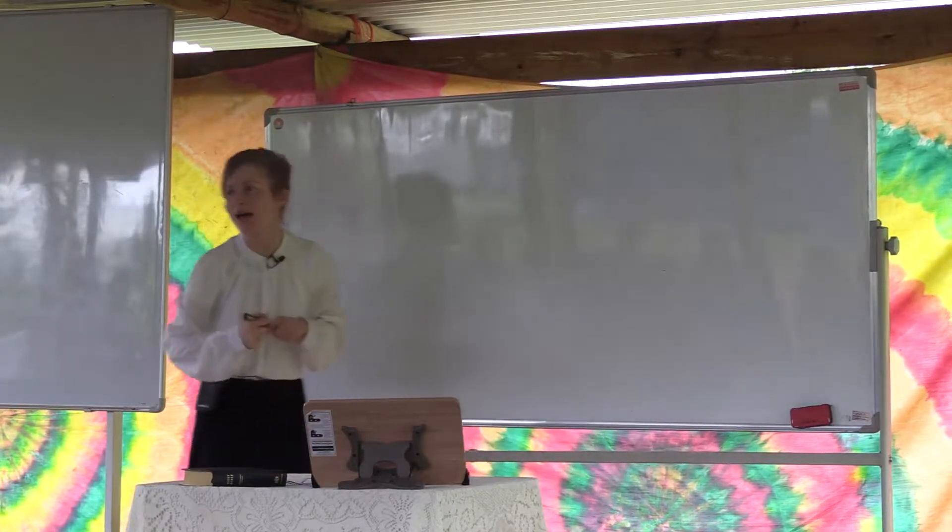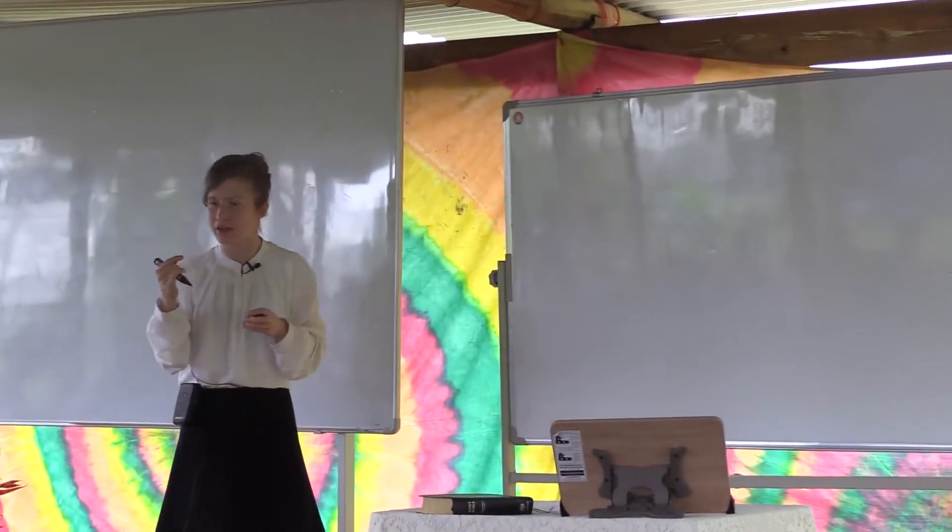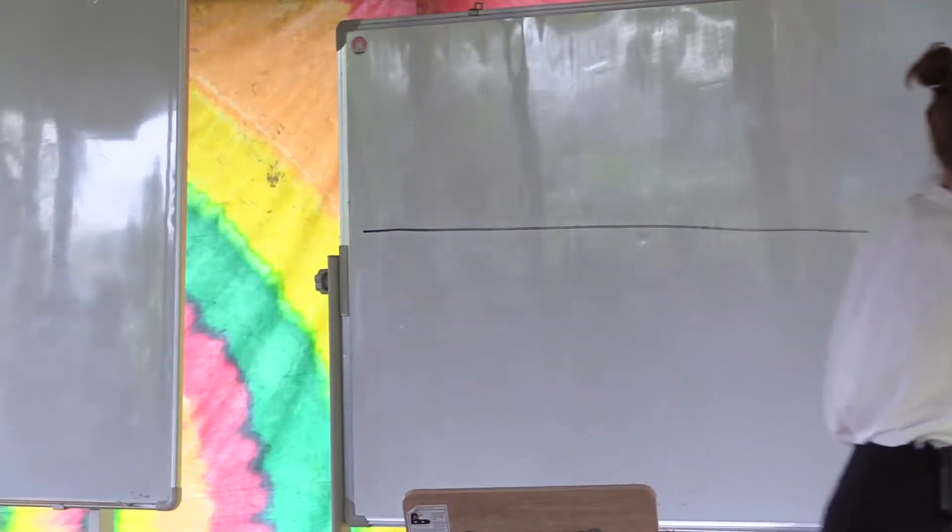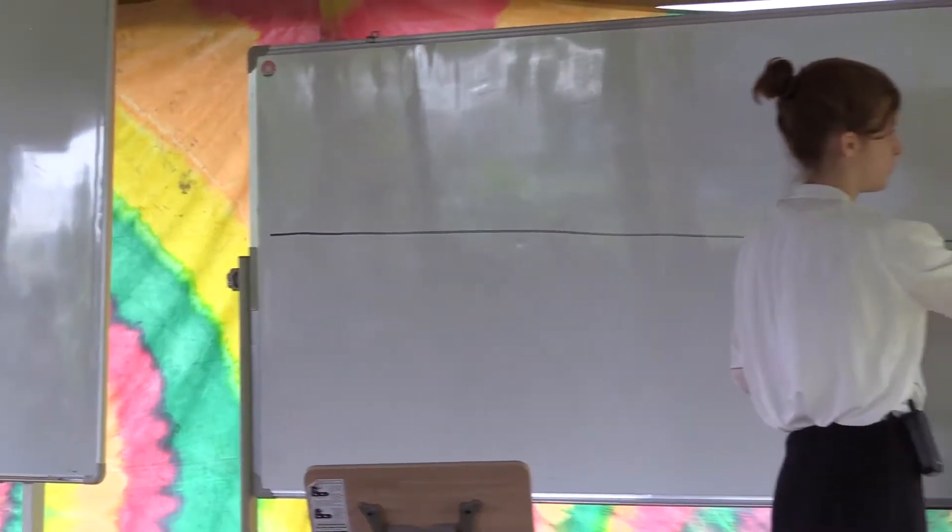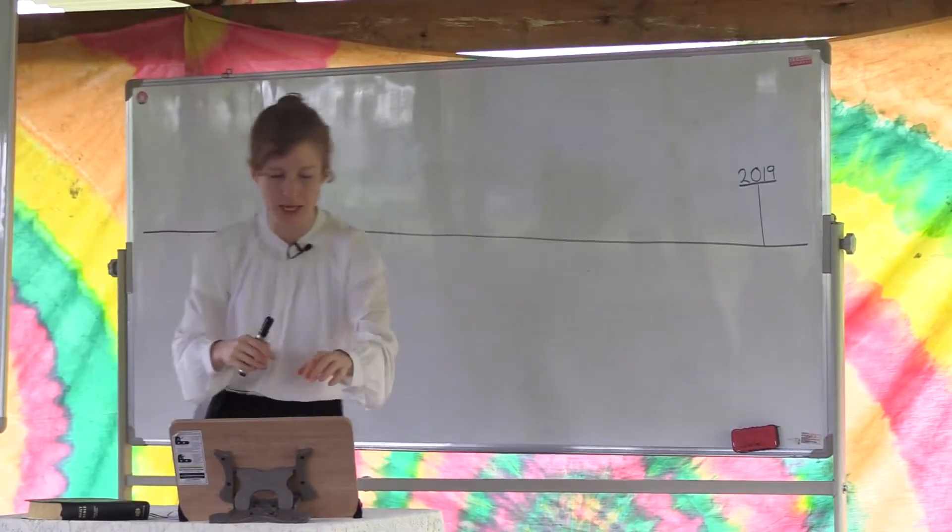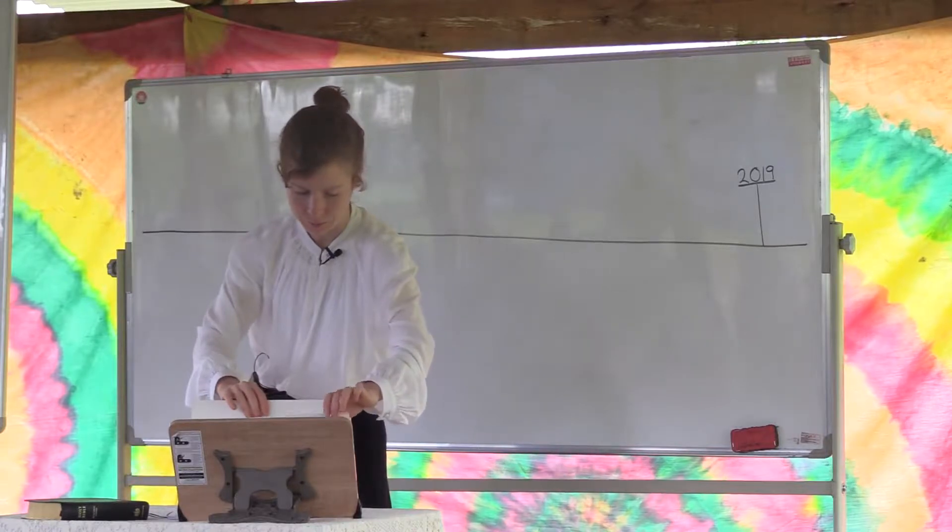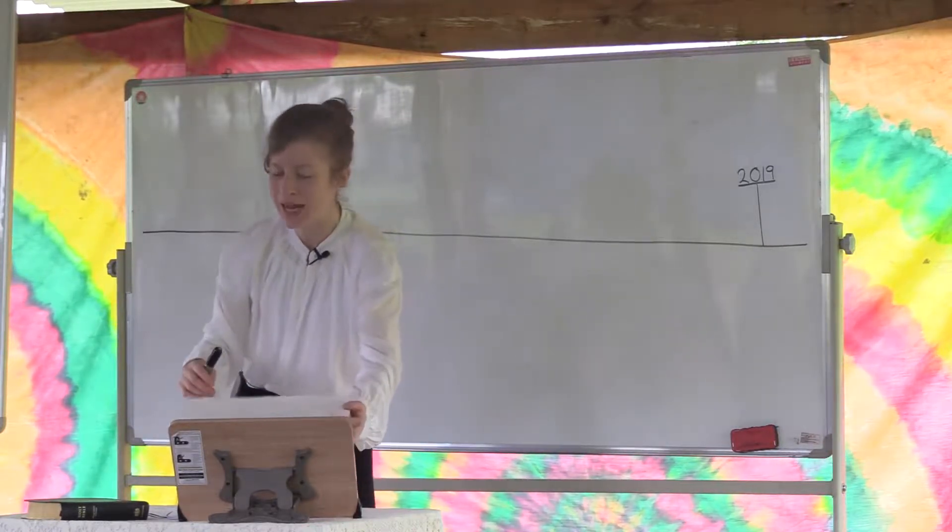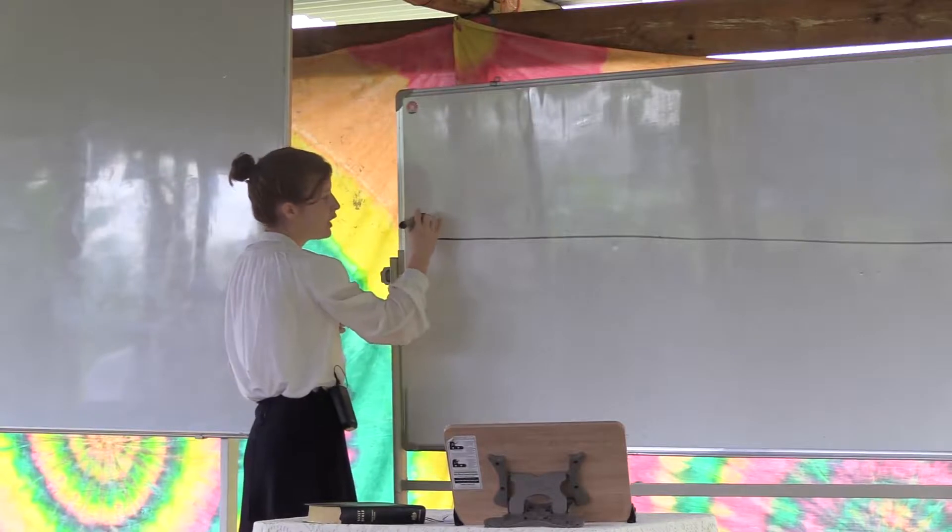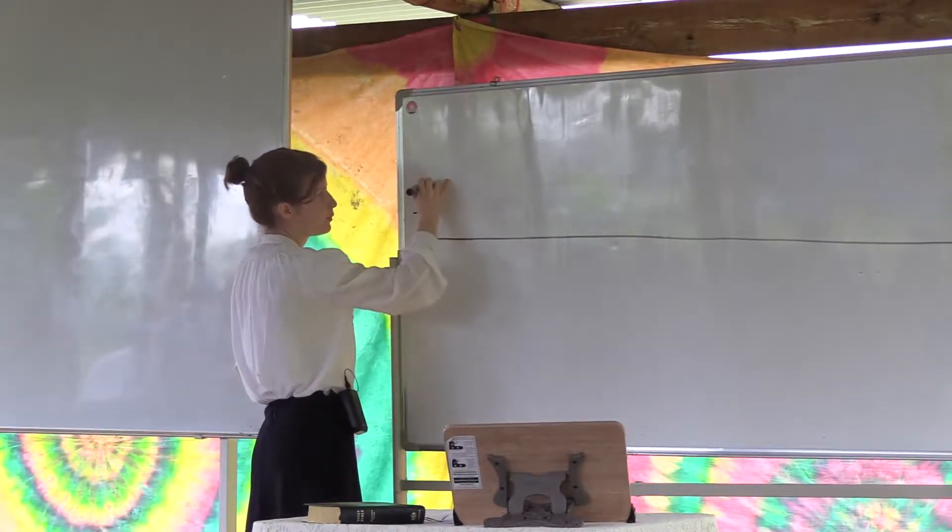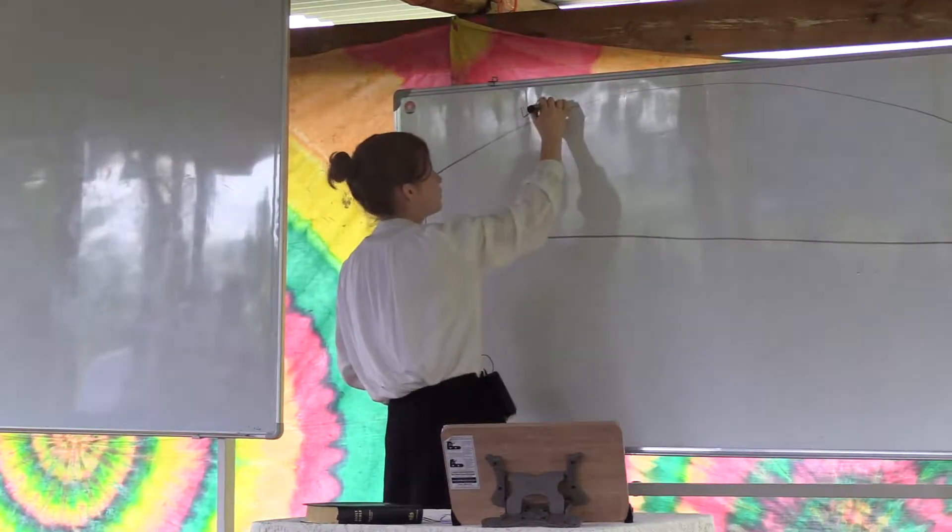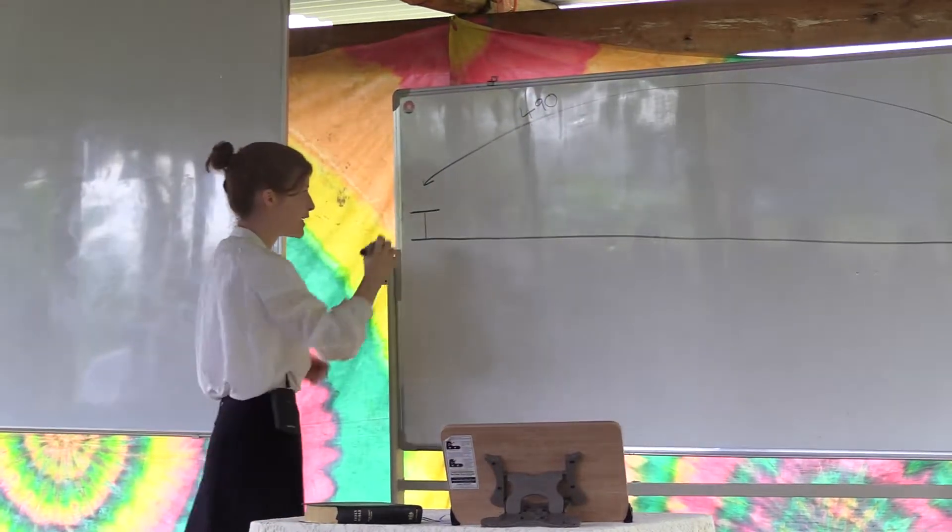So we're going to do with 2019 what we began to do with 2014 this morning, and that is bring in some prophetic periods. The first one I'd like to introduce is one that we did this morning. Take 2014, and that is the 490.